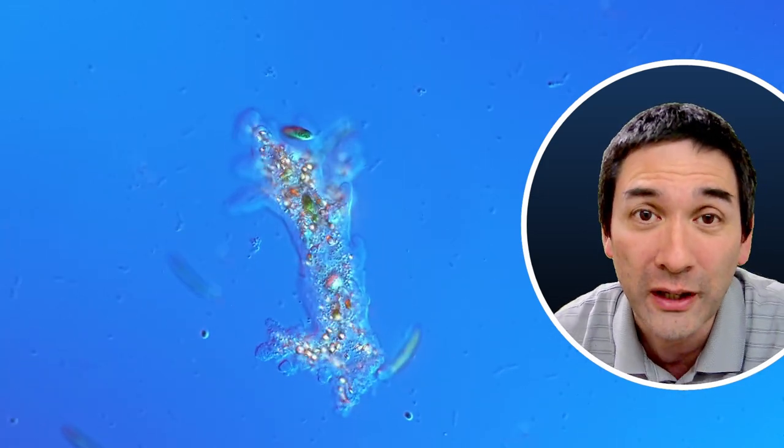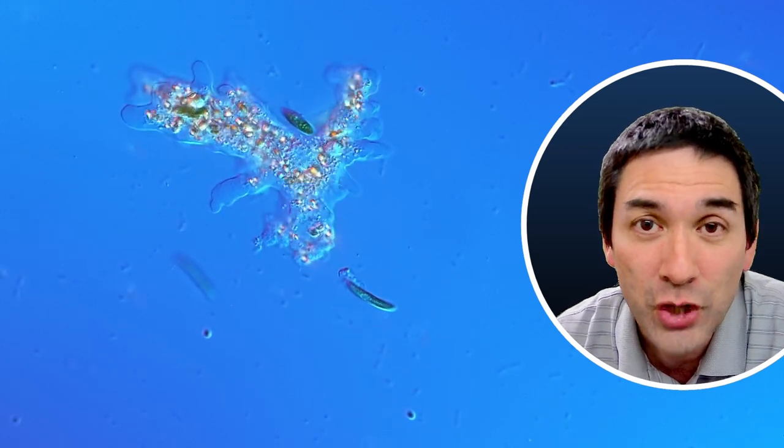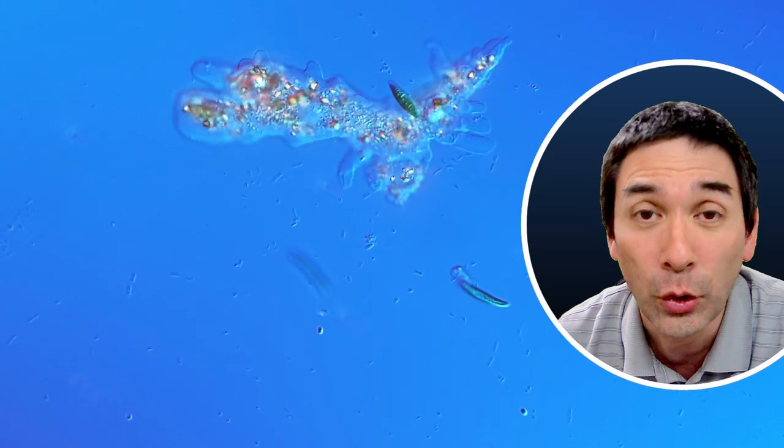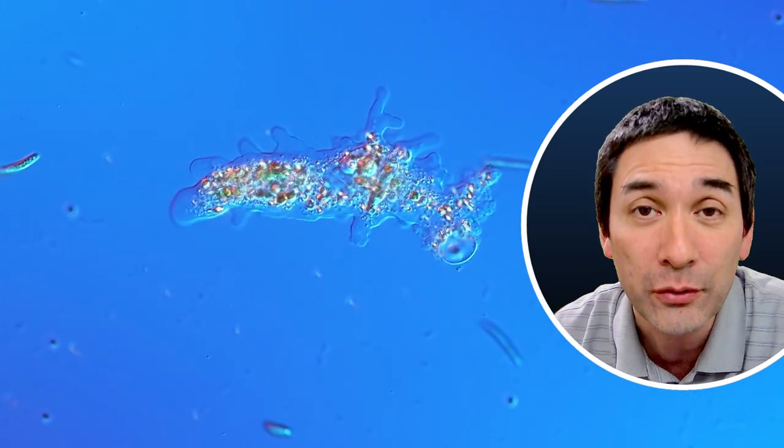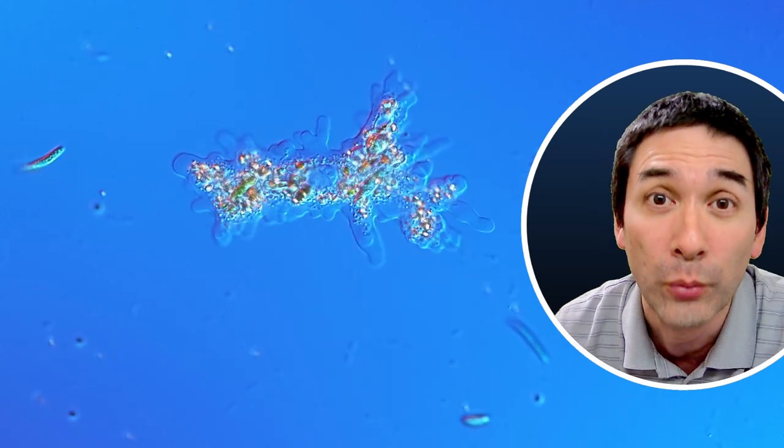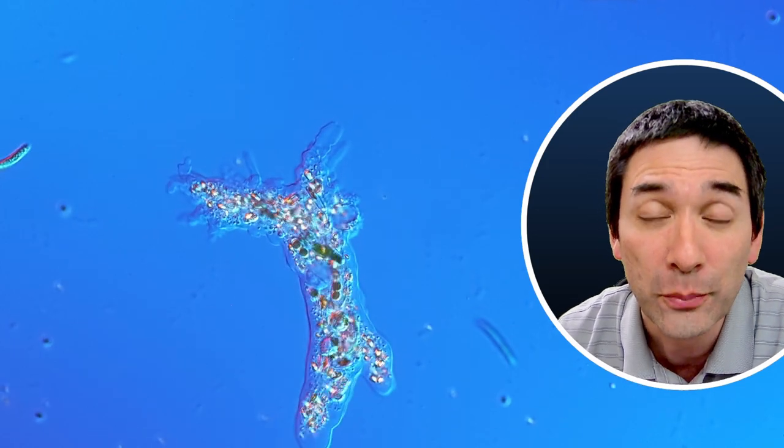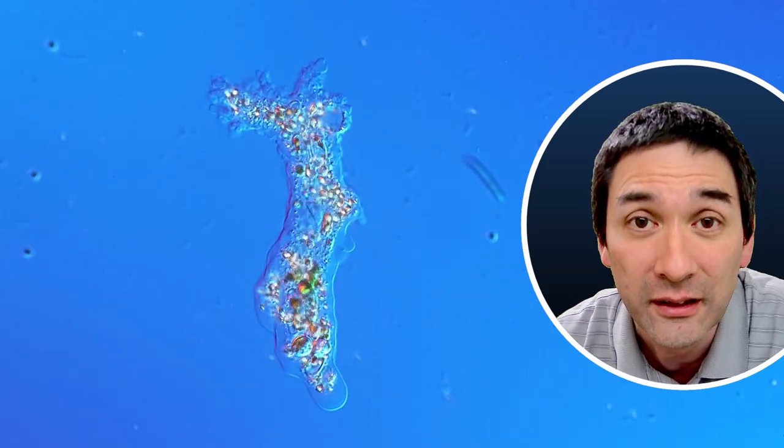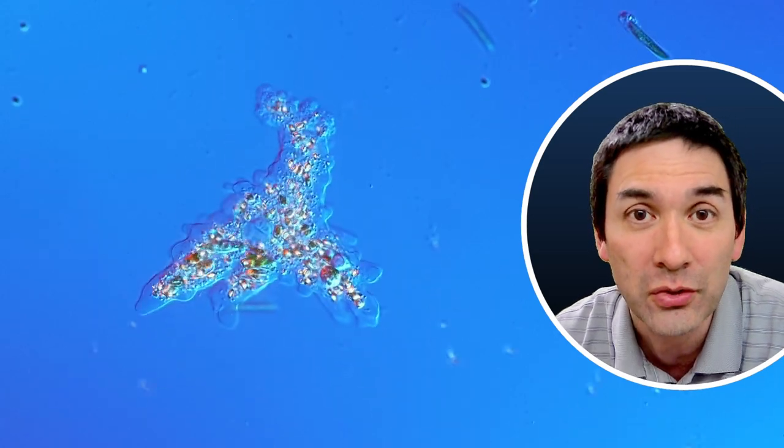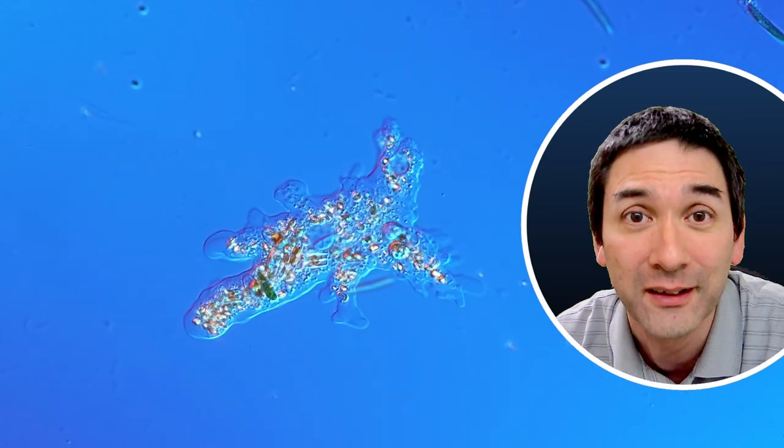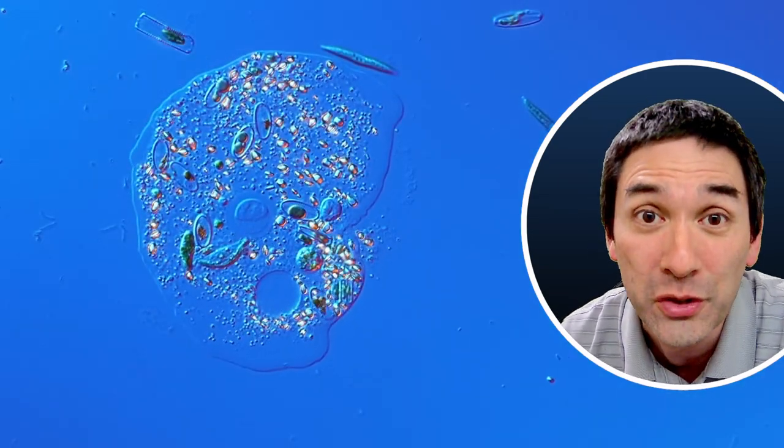This amoeba was moving around hunting for food and changing its shape as it's moving along. However, as the time passes by the water under the microscope slide started to evaporate more and more. And the cover glass, which is on top of the amoeba, started to press down on this little creature more and more. And this caused the amoeba to become compressed and squashed and even to pop open. And this is something I'm going to show you here.